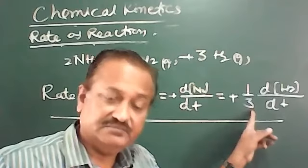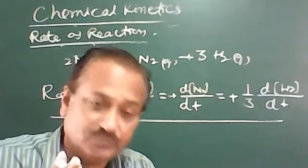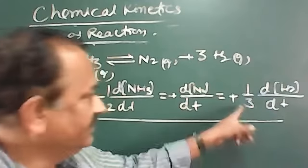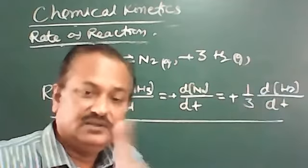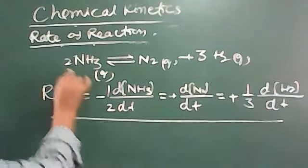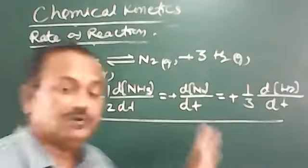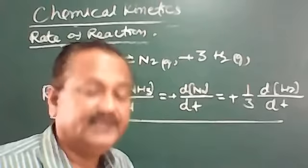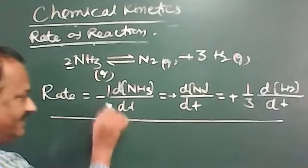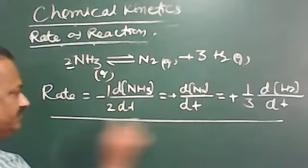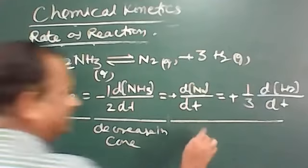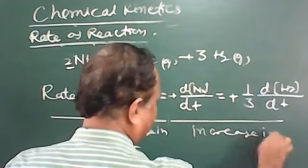Why divide by 3? Because the reaction takes place at the molecular level, and equimolar amounts must be taken. By dividing by 3, it becomes equal to unity. Similarly, if the coefficient is 1 it remains as 1, and if it is 2 we divide by 2. So the rate of forward reaction and rate of backward reaction take place at the same speed. The negative sign indicates decrease in concentration, and the positive sign indicates increase in concentration.